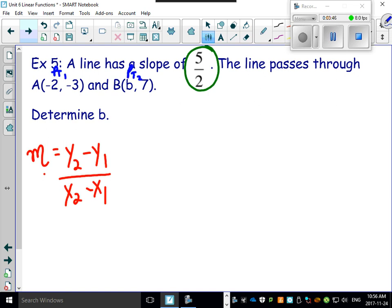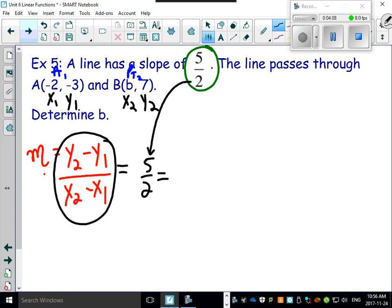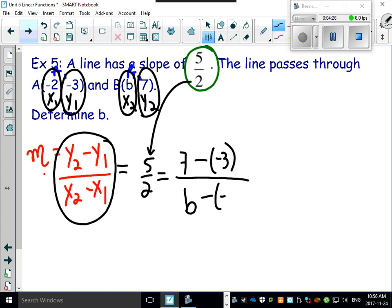So that would make this guy here x1, y1, and this guy here x2, y2. So here we go - your slope is actually 5 over 2, which equals this formula. Plug in the values: there's y2 at 7 minus y1, which is minus 3, over x2 which is b, minus x1 which is minus 2.